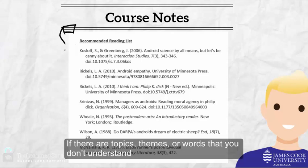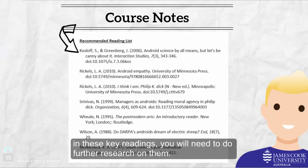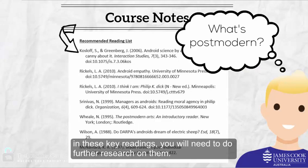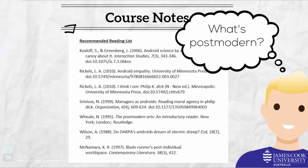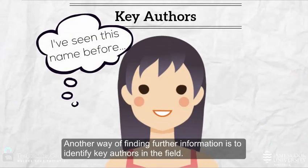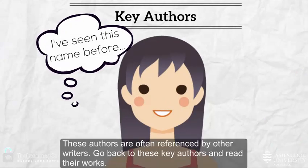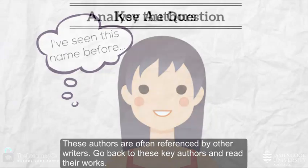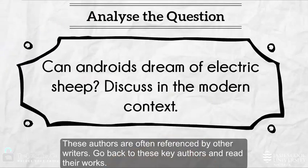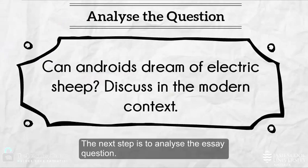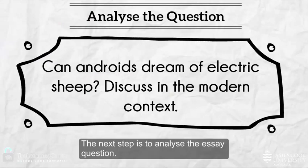If there are topics, themes or words you don't understand in these key readings, you will need to do further research on them. Another way of finding further information is to identify key authors in the field. These authors are often referenced by other writers. Go back to these key authors and read their works.